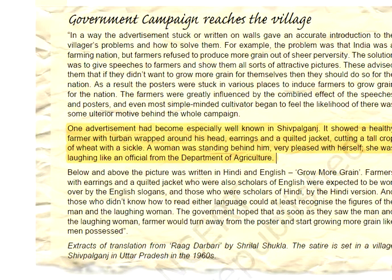Many government campaigns reached the villages. One well-known advertisement showed a healthy farmer standing in a turban, wearing earrings and a quilted jacket, cutting a tall crop of wheat with a sickle. A woman standing nearby was laughing like an official from the Department of Agriculture. The slogans written below and above the picture read 'Grow More Grain.' This was just the start of the Green Revolution, encouraging farmers to grow more and more grains.